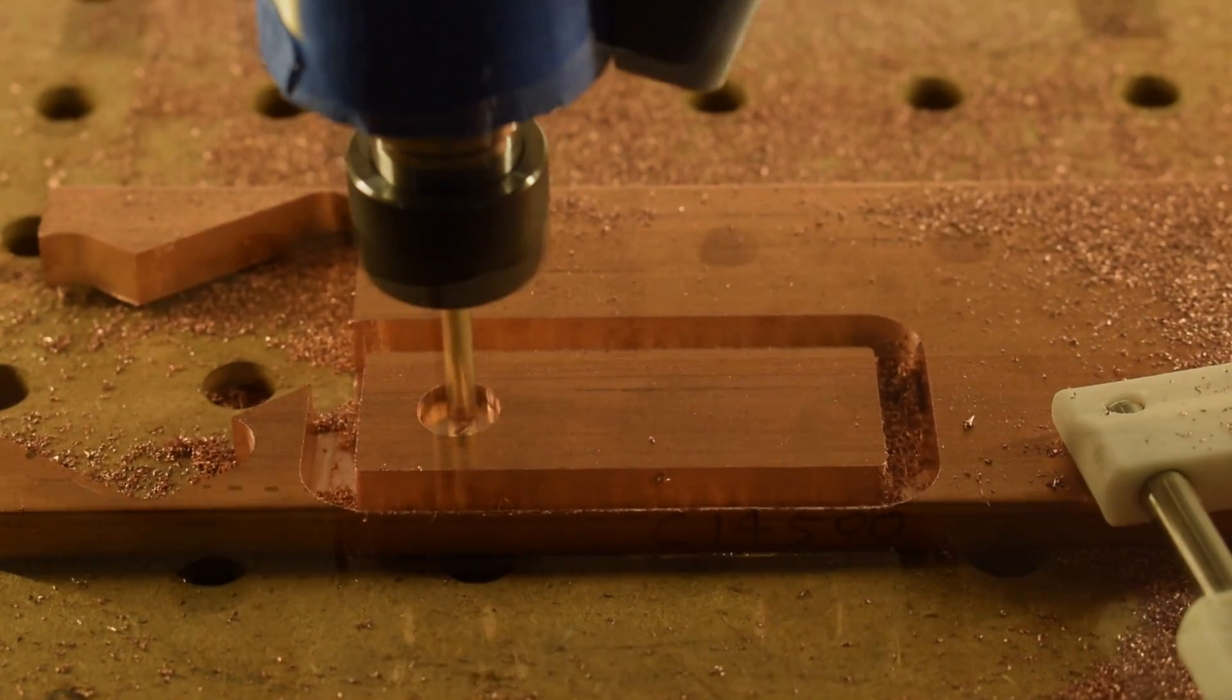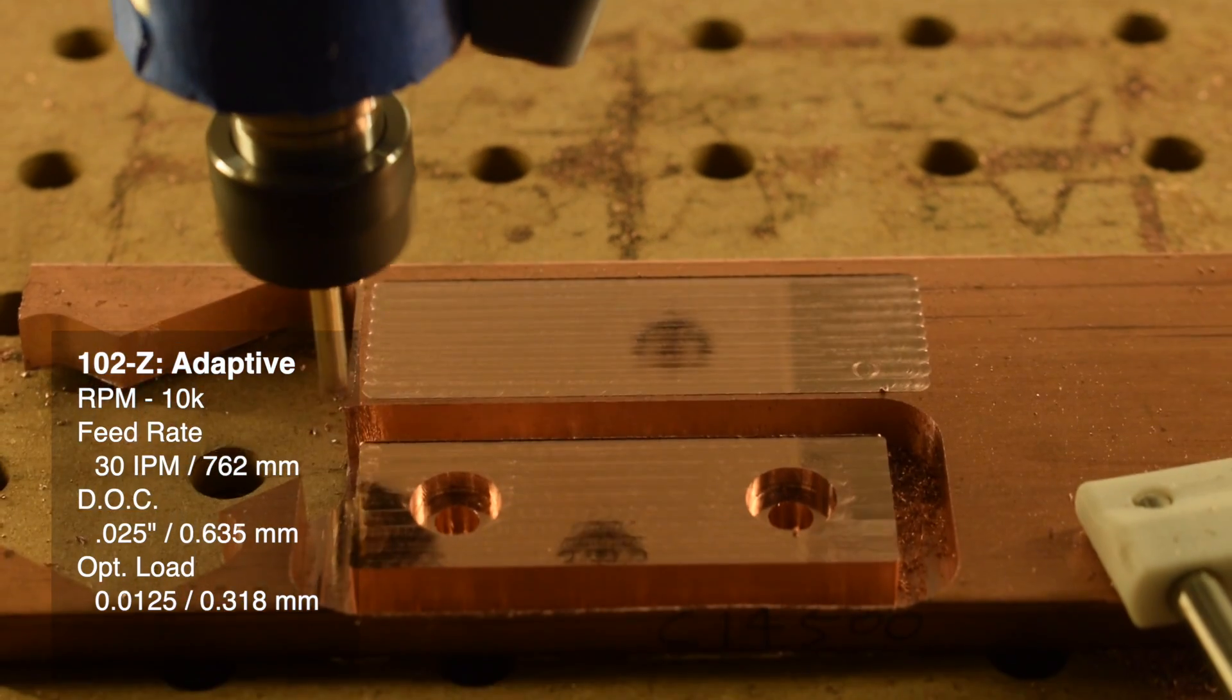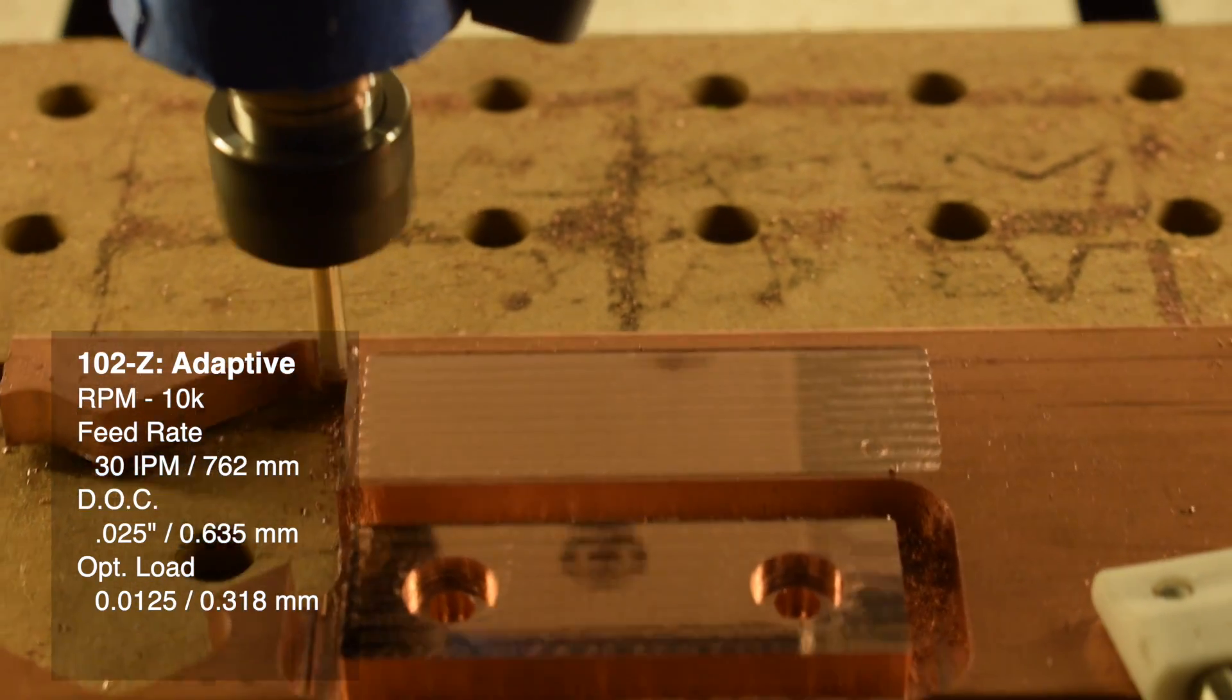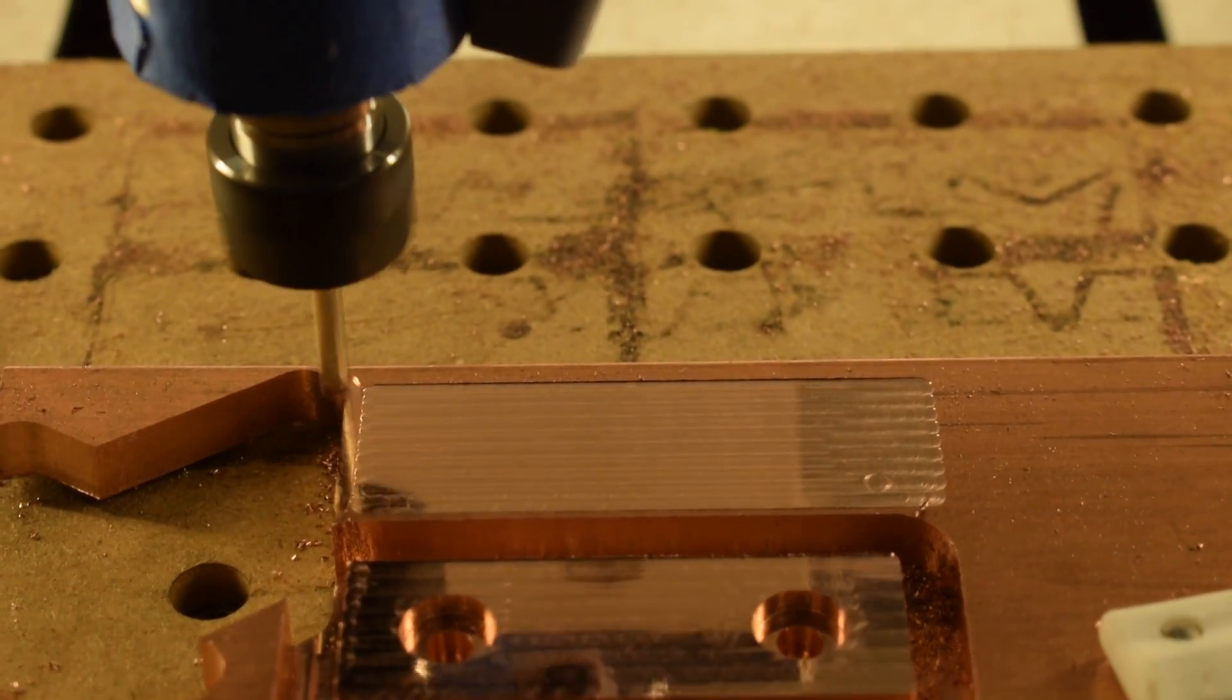For said adaptive toolpath, I'd start at 10,000 RPM, a feed rate of 30 inches per minute, a 25 thou depth of cut, and a 13 thou optimal load. Now this, this is much less stressful to watch.